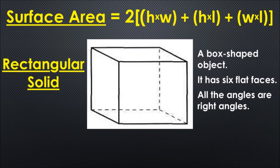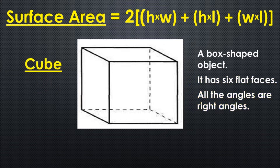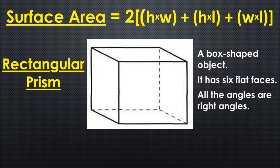Here's an example of a rectangular solid. As you can see, it is a box-shaped object. It has six flat faces and all the angles are right angles. It can also be called a cube or rectangular prism.